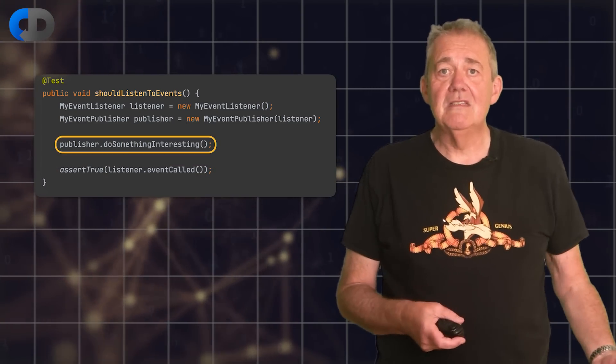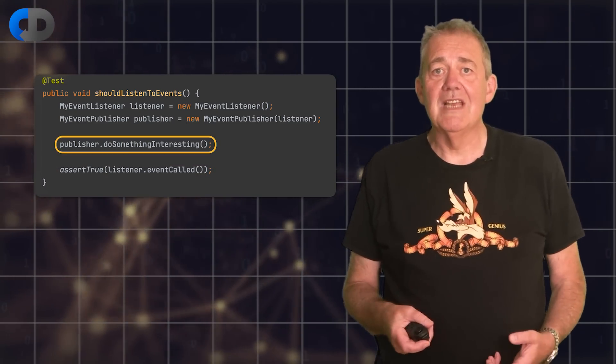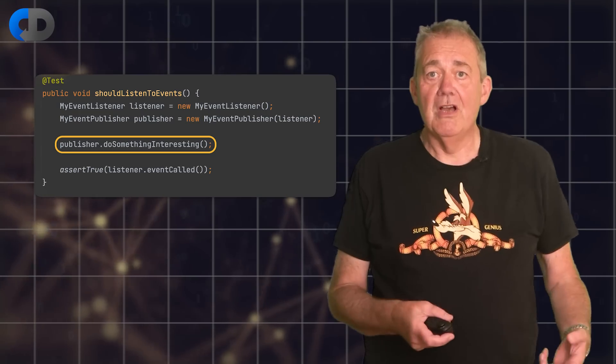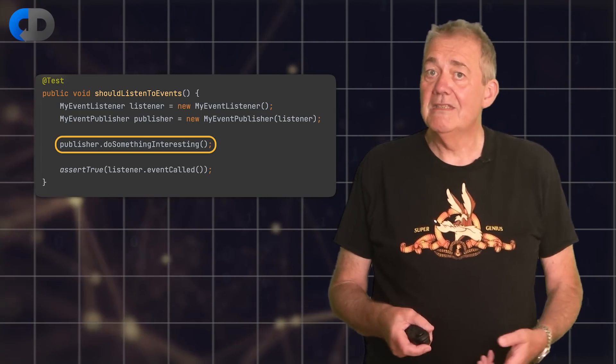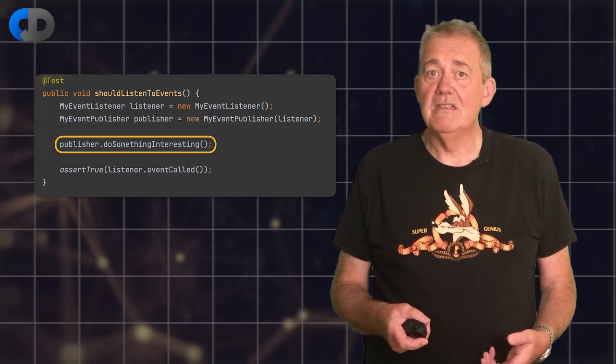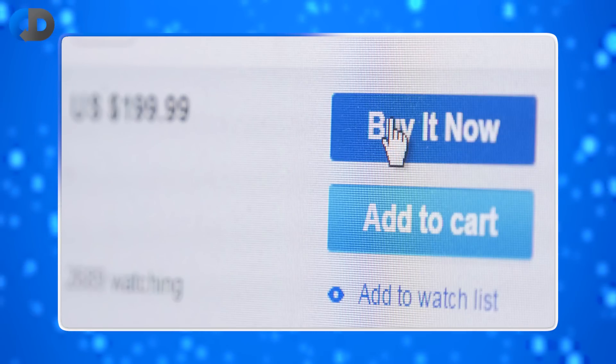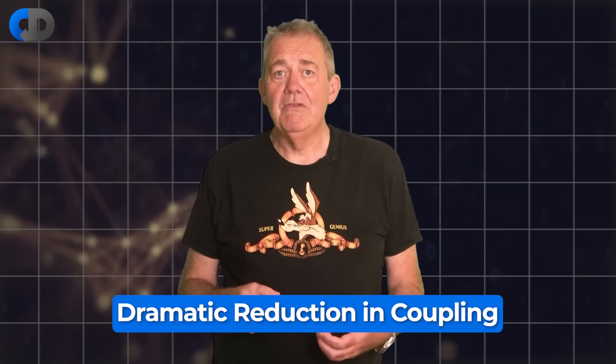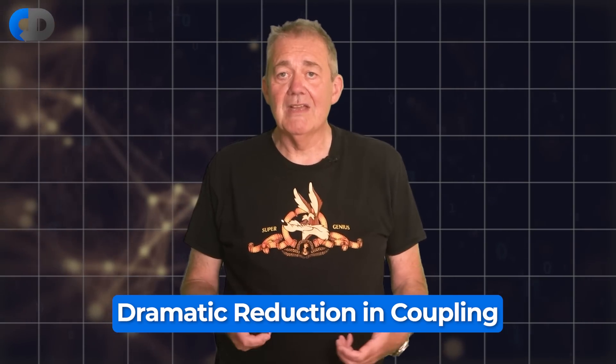So we issue an event when something interesting happens in our code and other code may or may not be listening for that event. At the point when you write the code issuing the event, it doesn't know or care. If there's something listening, then it can act on the event, but if not, no harm's done. This simple inversion of the conversation quite dramatically reduces the coupling between the parts of our code.